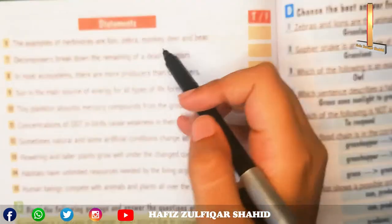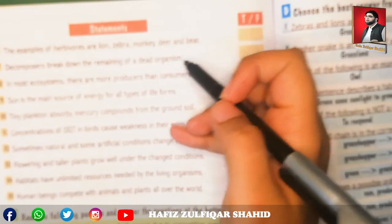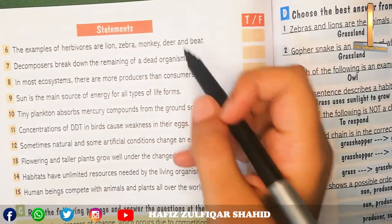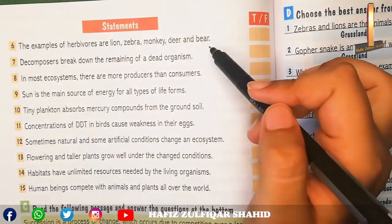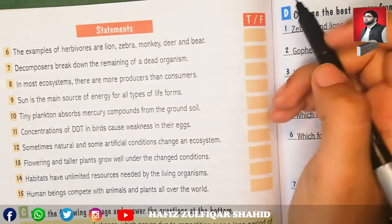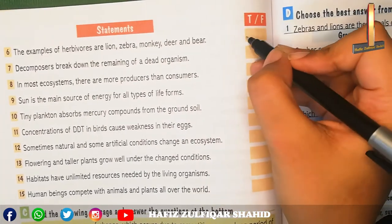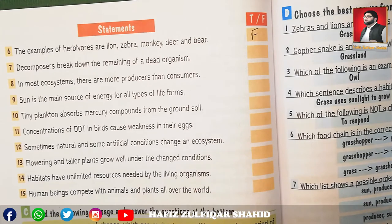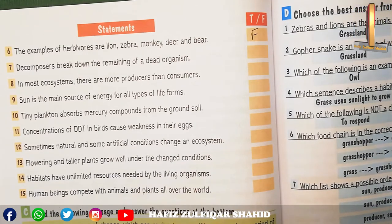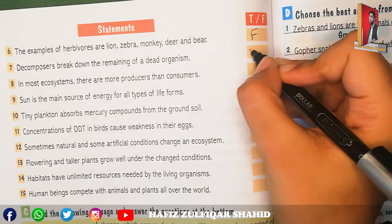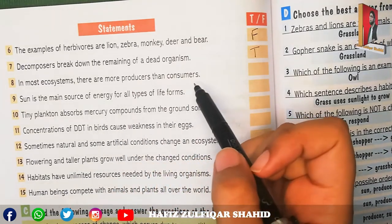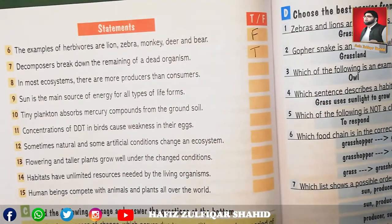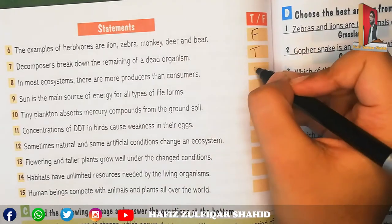The examples of herbivores given were lion, zebra, monkey, deer, and bear — this is false because lion and bear are not herbivores; only zebra and deer are. Number seven: decomposers break down the remains of dead organisms — true. Number eight: in most ecosystems there are more producers than consumers — true.